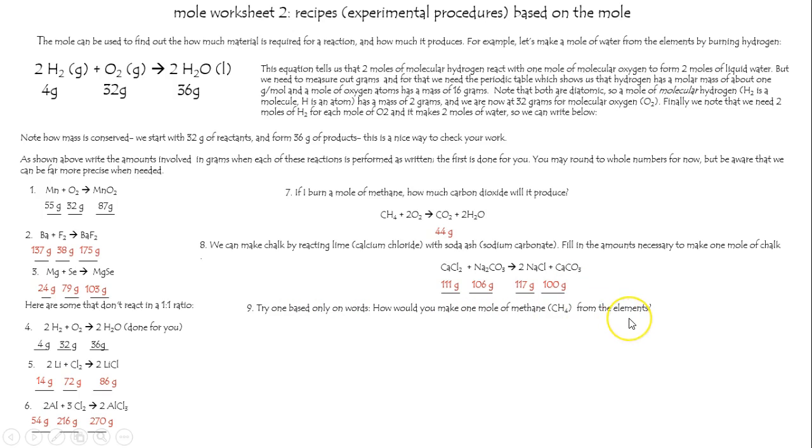Try one based only on words. If we want to make a mole of methane from the elements, I'd make some carbon and some hydrogen. We'll need two moles of molecular hydrogen, but that's 12 for the carbon. 2 times 2 is 4 for the hydrogens to make our 16 grams of methane, CH4. More important disclaimer,